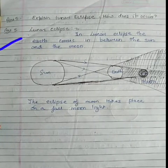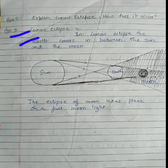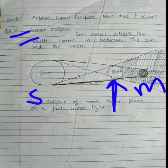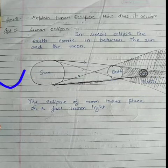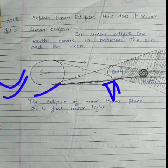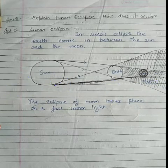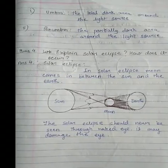Now students, fifth question is: explain lunar eclipse. How does it occur? You have to tell what is lunar eclipse and how it occurs. So students, in lunar eclipse, the earth comes in between the sun and the moon. You can see students in this diagram, the earth is coming between the sun and moon. The eclipse of moon takes place on a full moon night. So this is all about today's lecture.